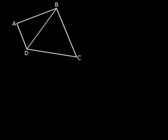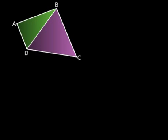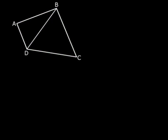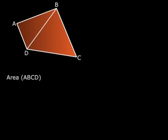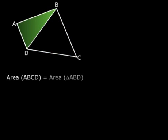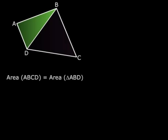Let me draw diagonal BD there. We now have with us two triangles, triangle ABD and triangle BCD. And the area of the quadrilateral ABCD, look at the figure. That is nothing but the area of triangle ABD plus the area of triangle BCD, right?